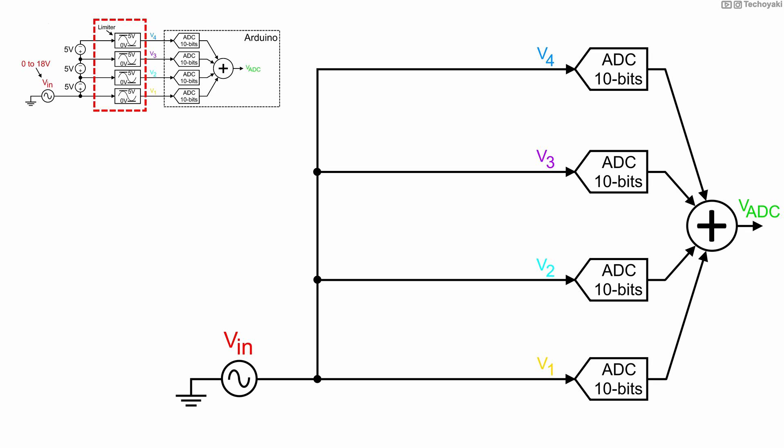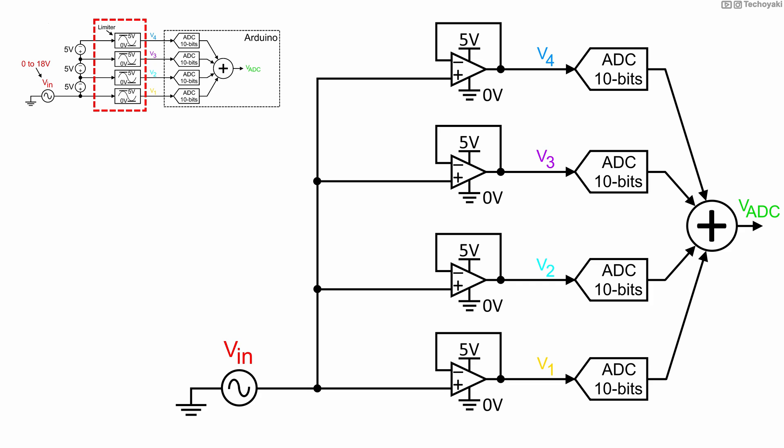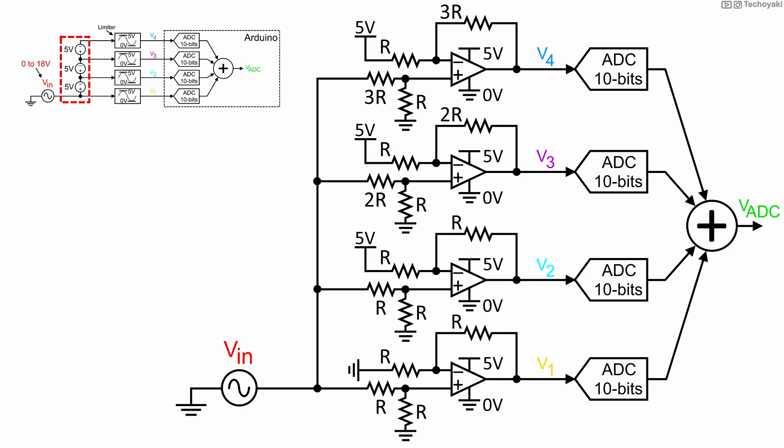The first part with the voltage limiter is achieved by using a rail-to-rail op-amp supplied with 0 to approximately 5 volts. This way, we know for sure the op-amp can't provide more than 5 volts into our Arduino. The second part with the voltage offsets is achieved by using a differential op-amp configuration, with various supply configurations as shown in the figure, to set the voltage offset values.